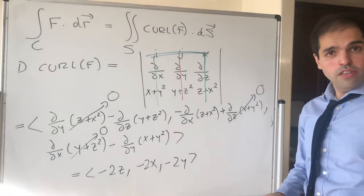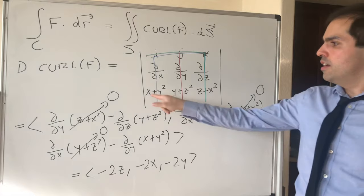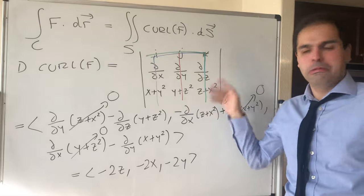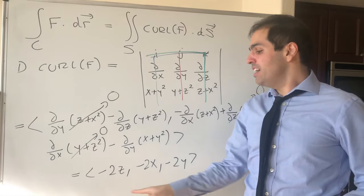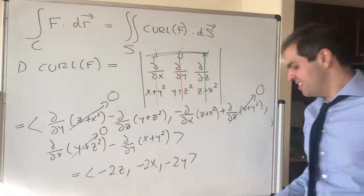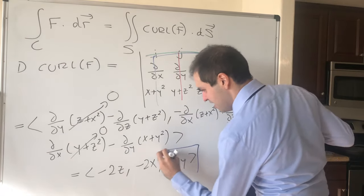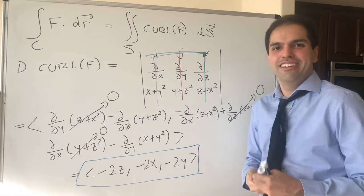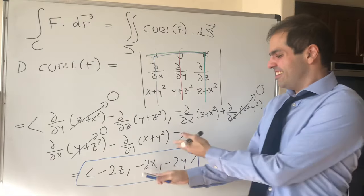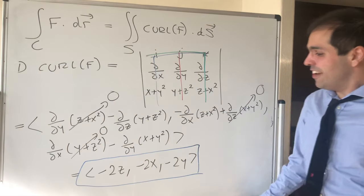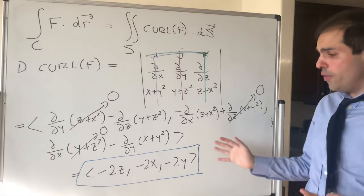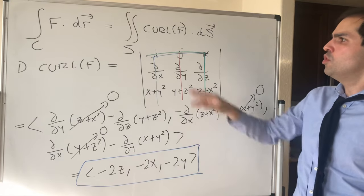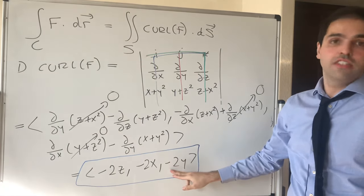So let me ask you: which is easier to integrate — (x + y², y + z², z + x²), or (−2z, −2x, −2y)? Instead of doing a line integral of the hard thing, you just need to do the surface integral of this easier thing.